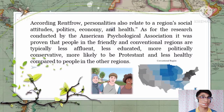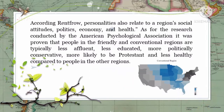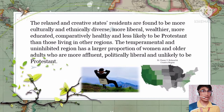People in friendly and conventional regions are more likely to be Protestant and less healthy compared to people in other regions. The relaxed and creative states' residents are found to be more culturally and ethnically diverse, more liberal, wealthier, more educated, comparatively healthy, and less likely to be Protestant. The temperamental and uninhibited region has a larger proportion of women and older adults who are more affluent, politically liberal, and unlikely to be Protestant. Theories and research on migration and social influence offer clues as to what may have shaped regional personalities.